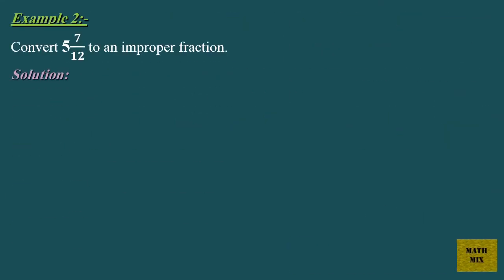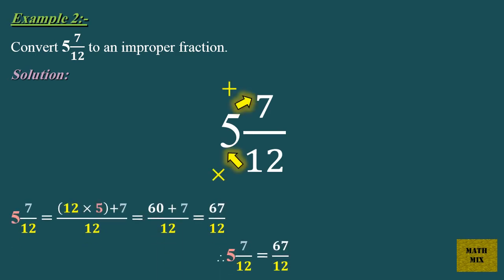Example 2: Convert 5 and 7 twelfths to an improper fraction. Solution: 5 and 7 twelfths equals 12 times 5, plus 7, over 12, which equals 60 plus 7, over 12, which equals 67 over 12.